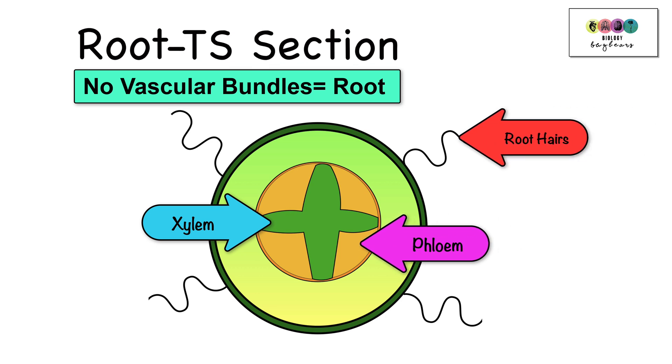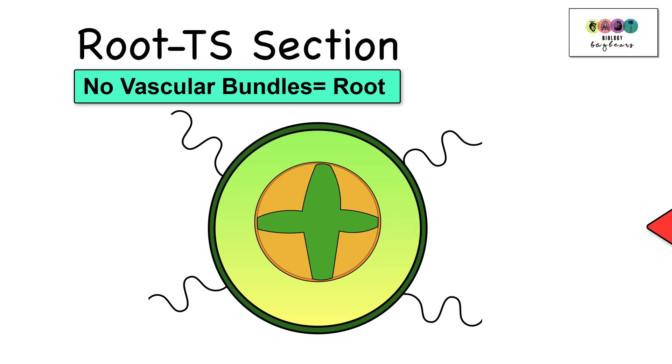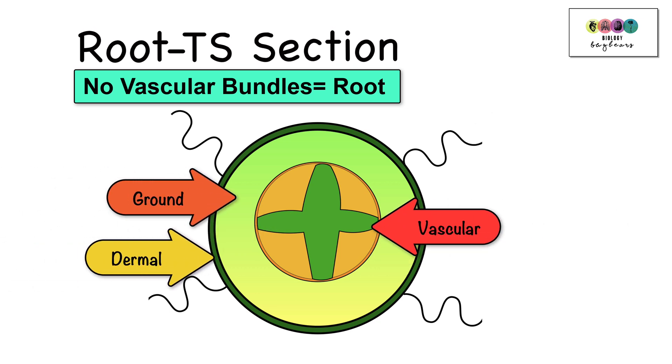And remember, in every plant diagram, always write in the three types of tissue, dermal, ground and vascular tissue. If you walk away from this revision session, knowing how to identify and mark in dermal, ground and vascular tissue on stem and root diagrams, well, you've walked away with probably vital marks in your leaving cert, so learn that.